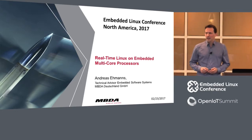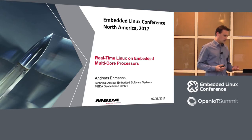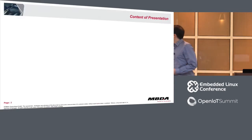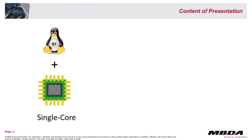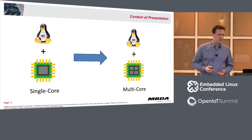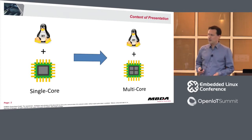Some of you may ask: real-time Linux — that's nothing new. Multicore — that's also nothing new for Linux. So what's the content of this talk? The talk is about the combination of both. About one year ago, I was in the situation of having real-time Linux running on a single-core processor. Hardware becomes more and more obsolete, and every new processor nowadays is a multicore processor. The question was: how can I migrate my existing software to new multicore hardware? Is this possible, and if so, how could it be done?